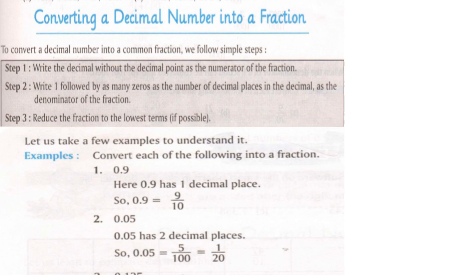Step one says: write the decimal without the decimal point as the numerator of the fraction. So when a fraction is given, write the decimal number without the point. Then write 1 followed by as many zeros as the number of decimal places in the decimal as the denominator of the fraction. Finally, reduce the fraction to the lowest term.